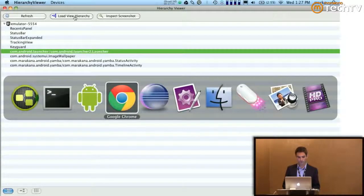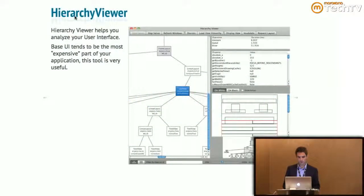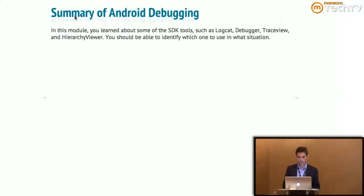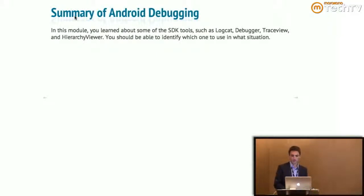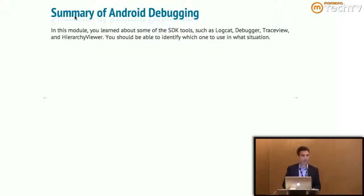To summarize: we've talked about LogCat, the debugger, TraceView, and Hierarchy Viewer — the tools you already have as a standard part of the SDK. Next we're going to talk about testing.